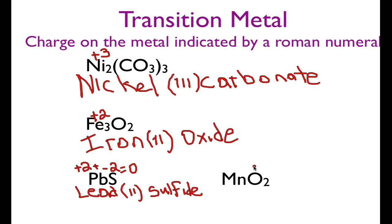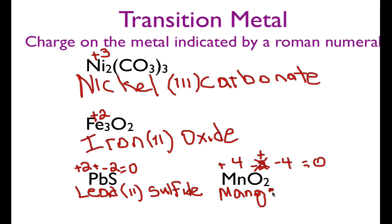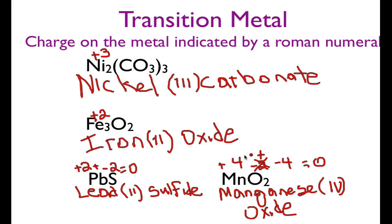For manganese dioxide: manganese is the metal, and oxygen has a charge of minus two, but there are two oxygens, so the overall charge on the oxygen part is minus four. Since the overall charge on the whole molecule must be zero and we only have one manganese, the charge on the manganese must be plus four. Plus four plus minus four equals zero. So this is manganese(IV) oxide. When you have one metal, you can't just do the reverse crossover — you have to think about the total charge on the anion side.